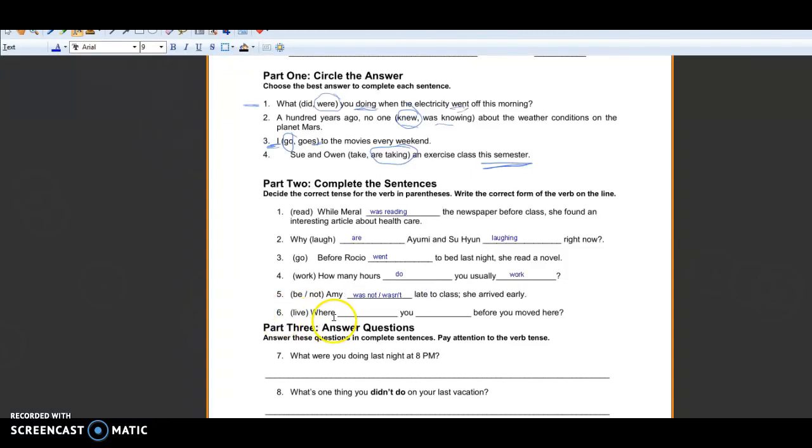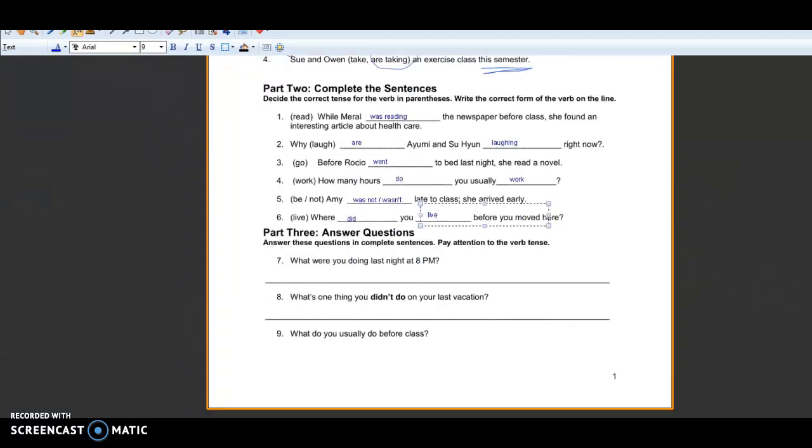Last one number six where you before you moved here and we have the verb live. So again like number two and number four these are questions we need to have an auxiliary verb, a helping verb first. So here we say moved, that's our keyword that means this question is about the past, so how do we make a past question? Do we use do, do we use are? No we use did. So always did if it's a simple past. So where did you, now the question is should I say live or lived? Not lived because we already have did so we know it's the past so we just put the base form where did you live before you moved here.